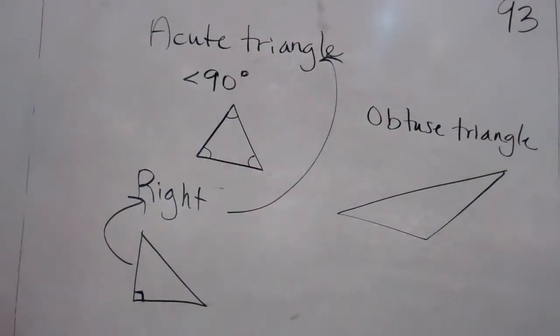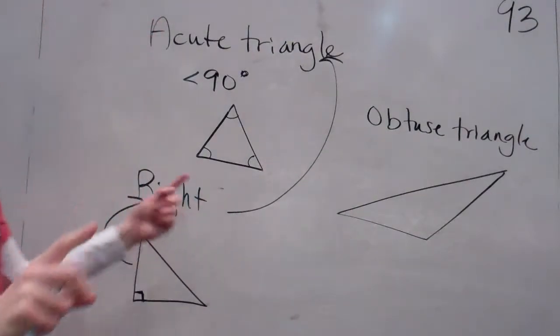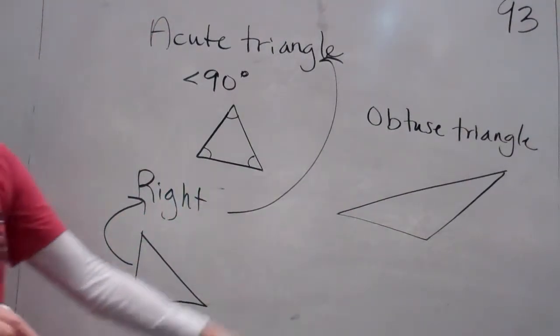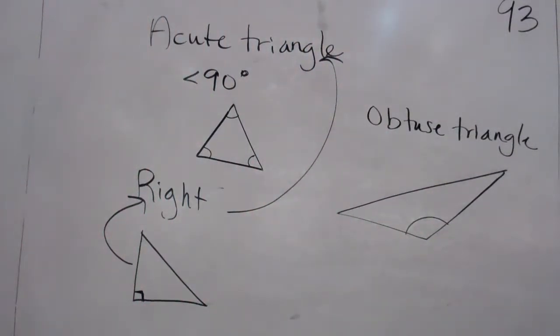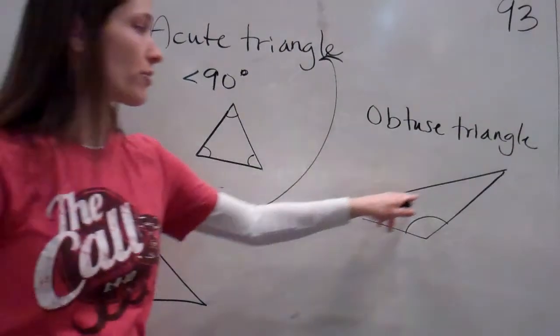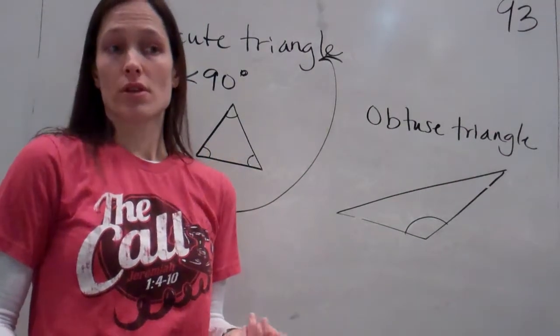Yes, Isaac? One angle, just like the right one, has one angle. The obtuse triangle has one angle that is obtuse. Okay? What do you notice about the other two? They're acute. Okay?